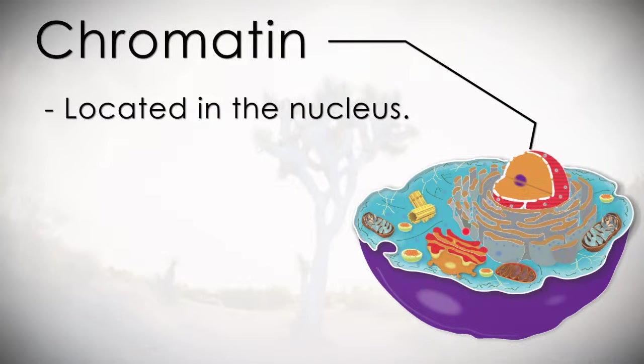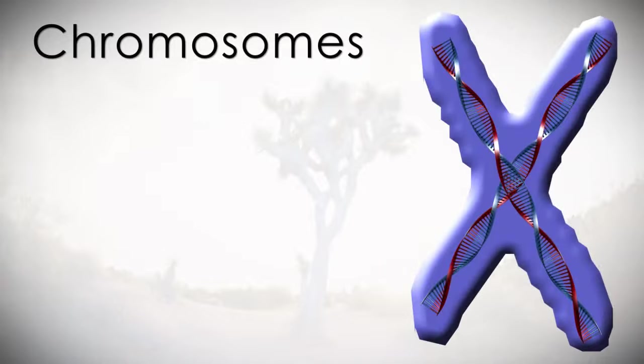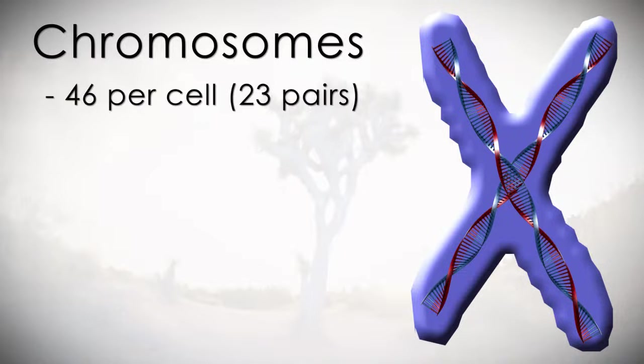Chromatin is also located in the nucleus. This is a loose, thread-like arrangement of DNA and protein. When the cell is ready to divide, the chromatin will form into rod-shaped structures called chromosomes. There are 46 total chromosomes in each cell.